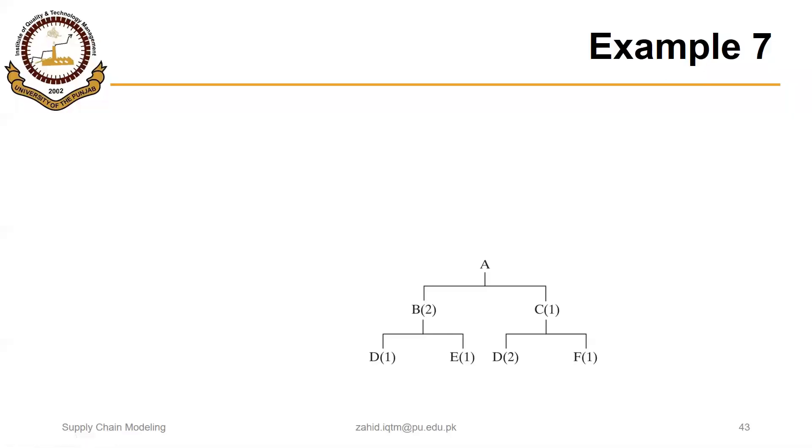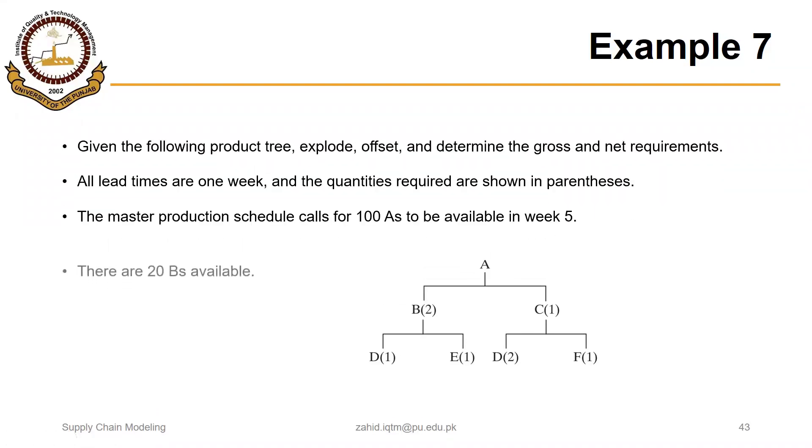In this segment we will solve another example focusing on complete MRP matrix. So here we have an end item A that has two sub-assemblies B and C, and B consists of D and E, and C also has D as well as F.